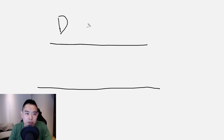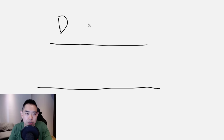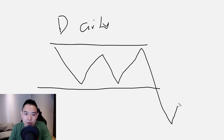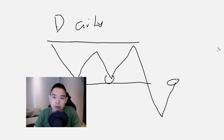What we are looking for is, on the daily time frame, the market is in a range and it breaks below support. What you're looking for is on a daily time frame to approach this area of resistance — previous support which could become resistance. Then on the four hour time frame, this is what you're looking for.